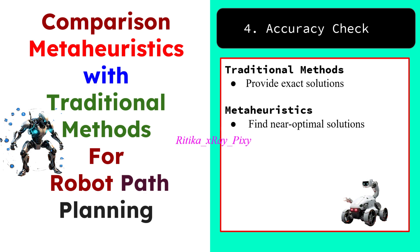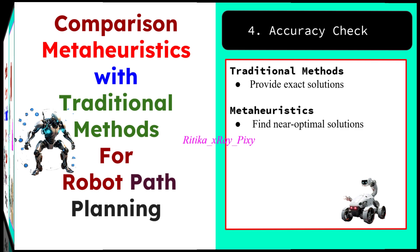Comparing algorithms based on accuracy: traditional methods provide exact solutions for a given problem and can find the shortest path, but these solutions are only optimal within known environments. In dynamic environments, these methods often struggle. Metaheuristic algorithms find near-optimal solutions — they don't guarantee the exact or optimal solution, but at least they give near-optimal solutions as compared to traditional methods in complex environments.